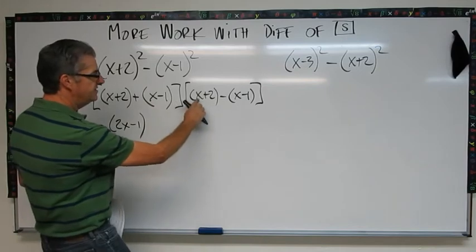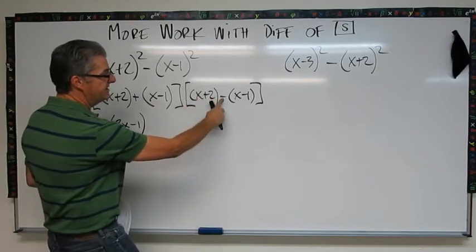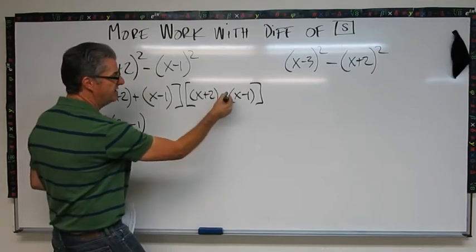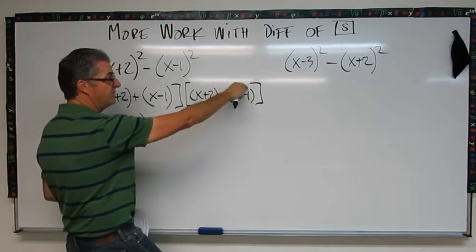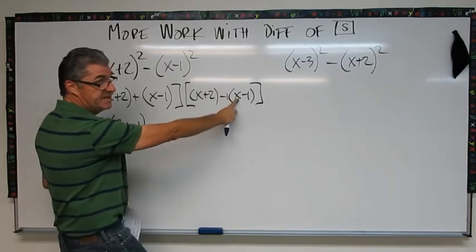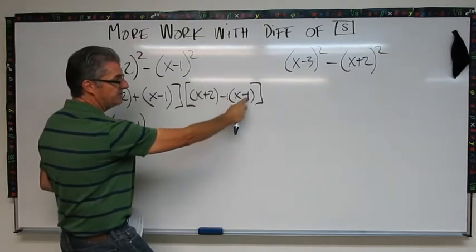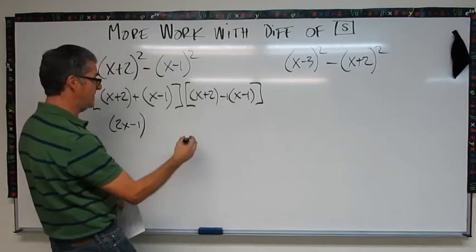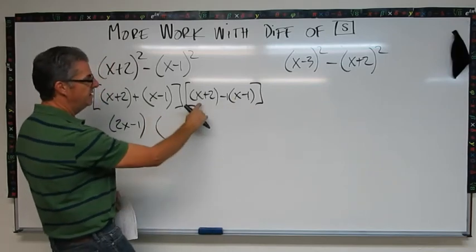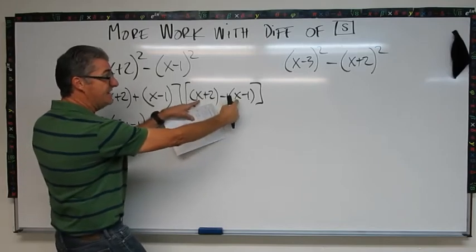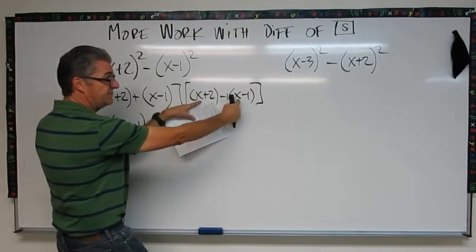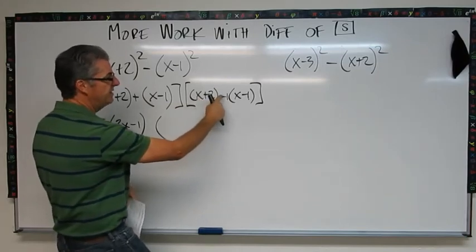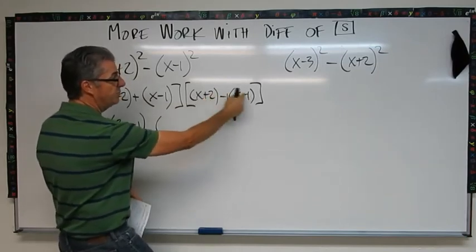So I can combine, but I just have to track my signs. So this is going to be: I have x and I have negative x, because negative 1 times x, so these x's are going to cancel out. And then I have 2 plus—minus times minus 1—so that's 2 plus 1, so this is 3.